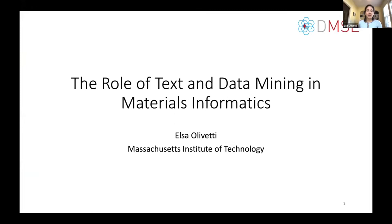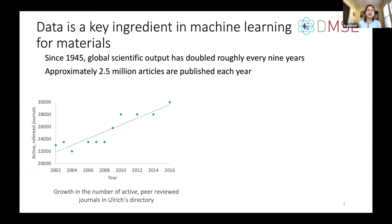The starting point for thinking about text and data is that data is a really key ingredient in machine learning for materials. We can think about the exponential increase in the amount of information that's come out that we need to process. The idea that we could assemble that information manually means we need some accelerated or autonomous way of doing that in order to have machine learning models access the data they need.